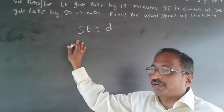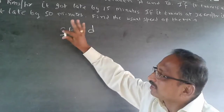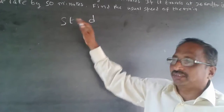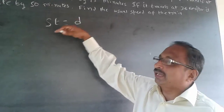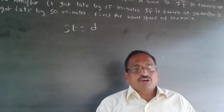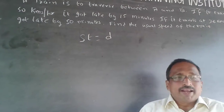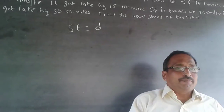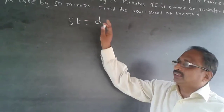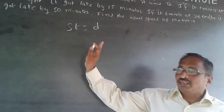Speed is the normal speed, time is the normal time, and distance is the normal distance. Always remember: speed into time is equal to distance. You can also say distance by speed is time, or distance by time is speed. Normally, in most questions the distance remains constant — only speed and time are manipulated. So I always write speed × time = distance as my first equation.